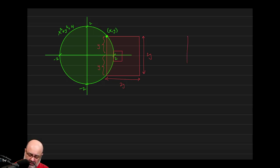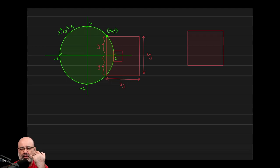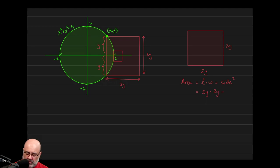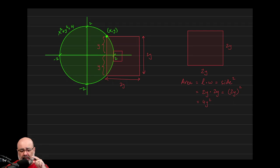Now we can draw a representative square — this is any square coming out of the page towards us. For any such square, the two dimensions are going to be 2y and 2y. The area of that representative shape is length times width, or side squared, which is 2y × 2y, or (2y)², which equals 4y².